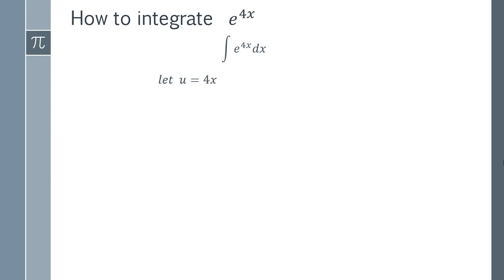We can just say that u equals 4x. So actually, our 4 is going to be gone, and we're going to have e to the u. And the integral of e to the u is simply e to the u.